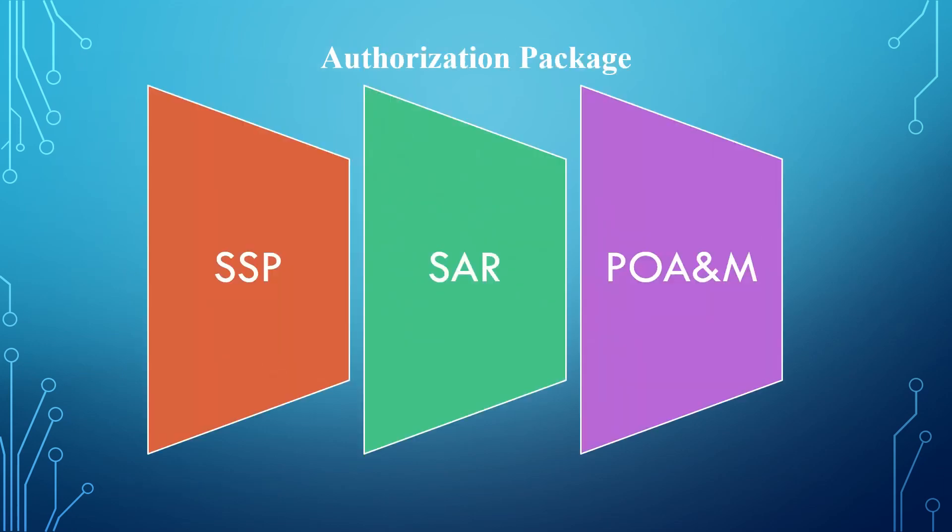The authorization package includes three security documents. The first document is the system security plan. The system security plan is a PL-2 control. It is a document that must be renewed, reviewed, or updated annually or whenever there is a major change to the system or to the application.